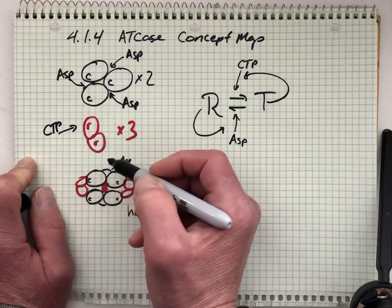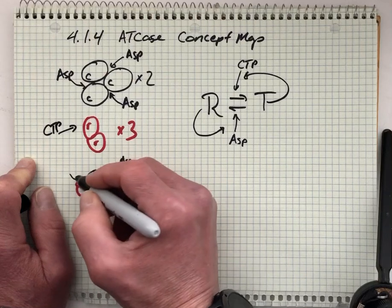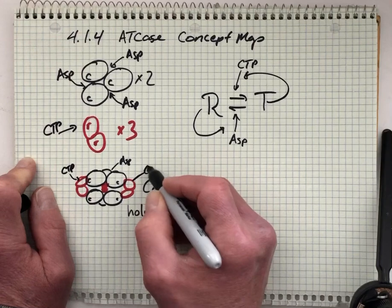CTP binds, there's a CTP binding site at each of these R subunits. We can draw that in here. So CTP is occupying some binding site on the regulatory subunits. There's a total of six CTP binding sites.